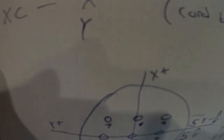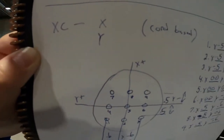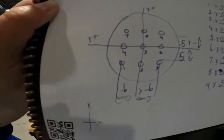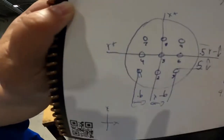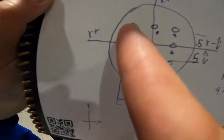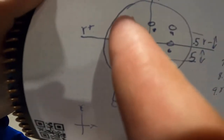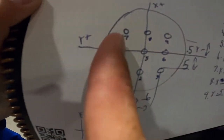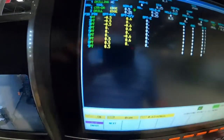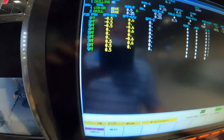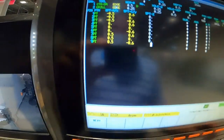Point nine — X is going to be positive 0.5, and then Y — we were at Y positive 0.6, then zero, now it's going to be Y negative 0.6. So Y is going to be negative 0.6.